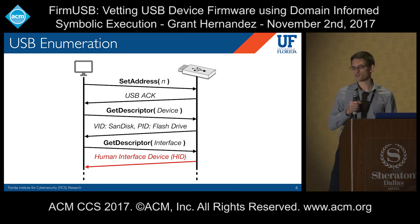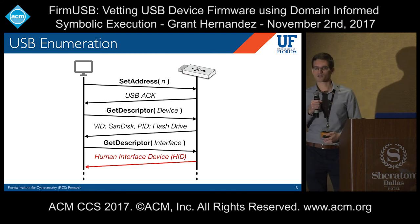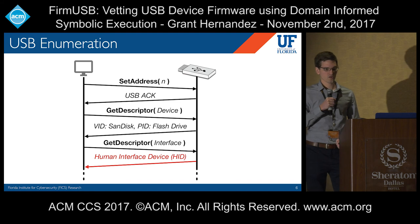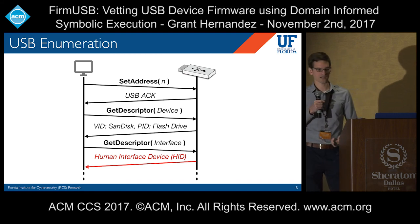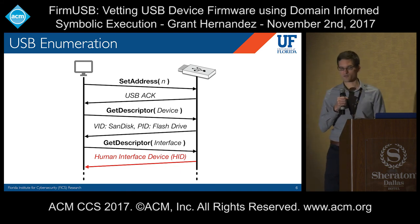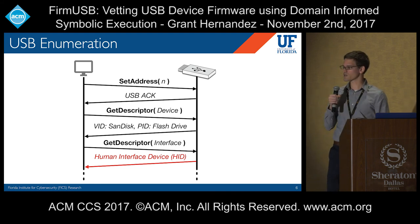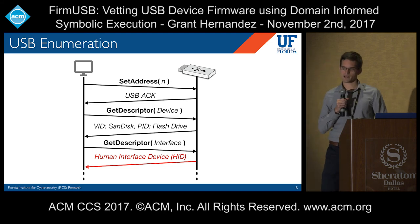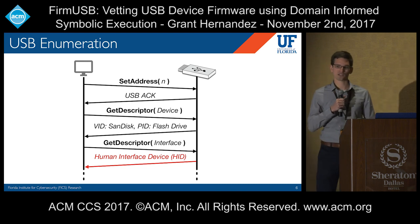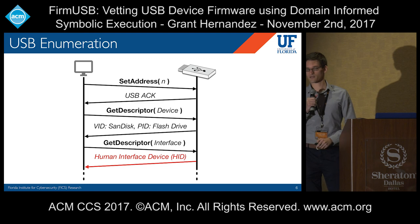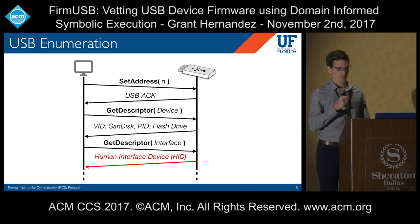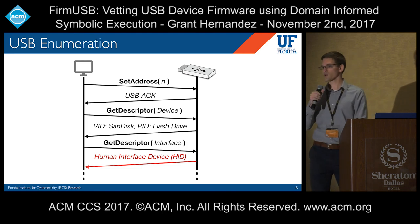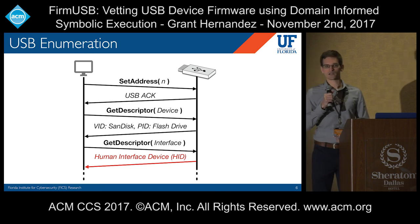During USB enumeration, when you first plug in a device, it's assigned a unique address so the host can communicate with it directly. It will be interrogated for its descriptors — first the device descriptor, which has things like vendor name and product ID, followed by the rest, including the interface descriptor. In this case, a flash drive will say it's a mass storage device, which means the OS loads certain drivers. But in a bad USB attack, this response can be replaced with something like a human interface device — keyboards, mice, or even network cards. The reason this is possible is that the device itself is telling the host what it is — a kind of client trust flaw, where we trust the device to say what it is with no way of verifying it.